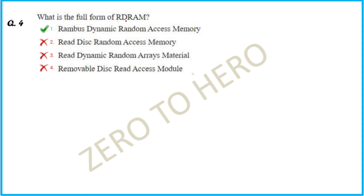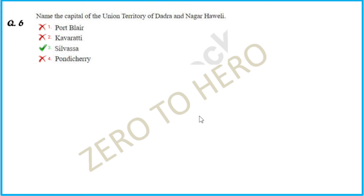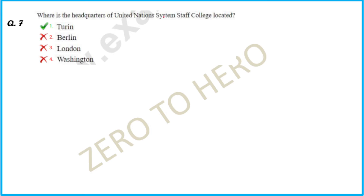What is the full form of RDRAM? Rambus Dynamic Random Access Memory. Which Ashokan Rock Edict mentions Ashoka's grief in Kalinga? The answer is Kalinga.